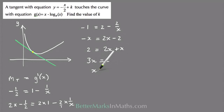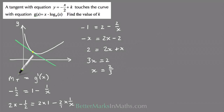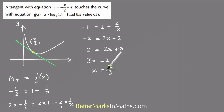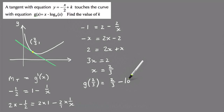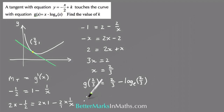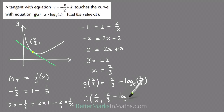Dividing both sides by 3 gives x equals 2 thirds. This x value is the x-coordinate of the yellow point where the two gradients are equal. To find the y-coordinate, we substitute x equals 2 thirds into g of x, giving g of 2 thirds equals 2 thirds minus log e of 2 thirds.